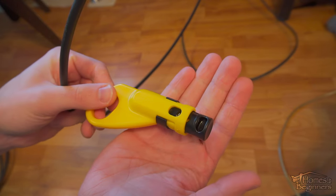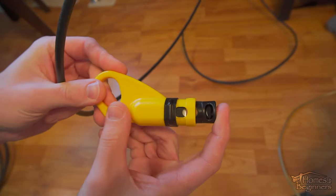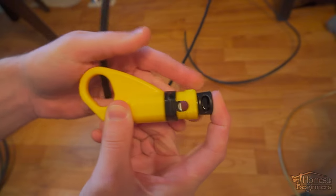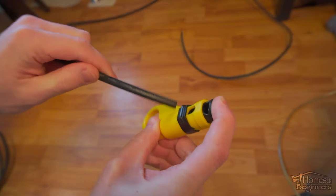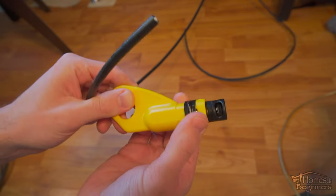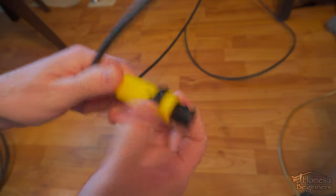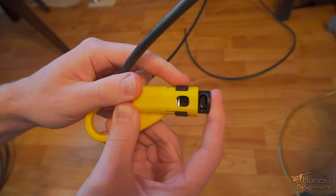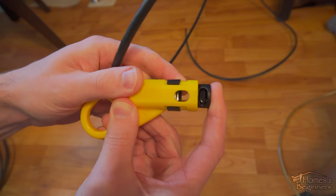Next is using the case cutter. As you can see it has a plunger. This is pushed inwards. It reveals a blade which cuts the casing on the coax cable. The cable is inserted into the hole. The cutter also has a stopper to set the appropriate depth on the cable casing. This is the correct depth for the compression connector.